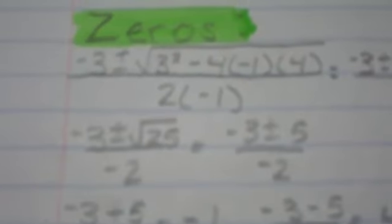That condenses into negative 3 plus or minus the square root of 9 minus negative 16, divided by negative 2. When you simplify all this out you get negative 3 plus or minus 5 divided by negative 2. Now you have to break this into 2 since you have that plus or minus, so it will be negative 3 plus 5 divided by negative 2, and negative 3 minus 5 divided by negative 2.